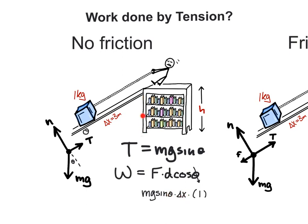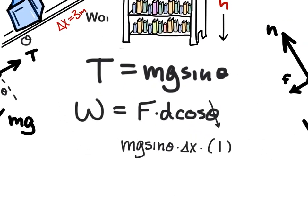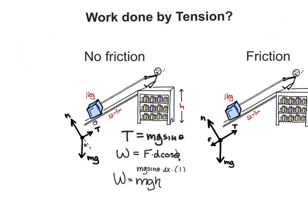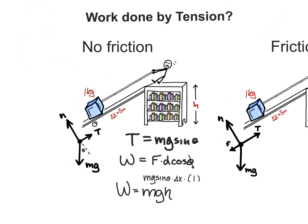But really, since sin theta is h over delta x, that just becomes m g h. And that should make sense considering that there is no friction to resist and what you get out of it is the gravitational potential energy m g h.